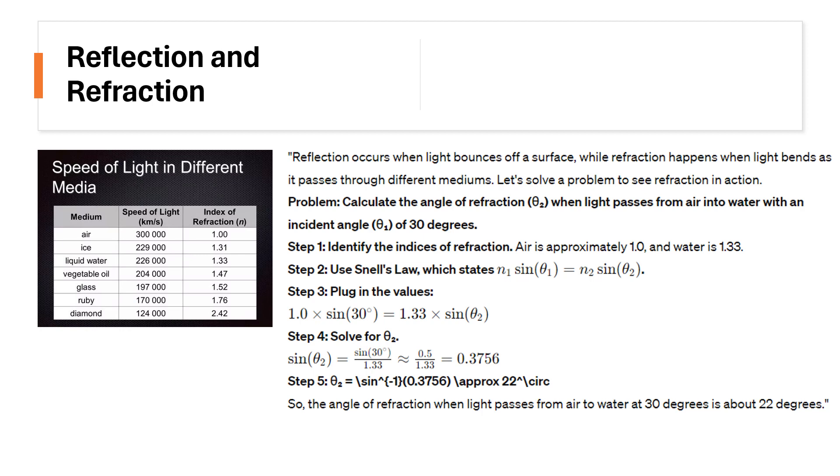Let's plug in the given values: 1.0, or the n sub 1, times sine 30 degrees equals 1.33 times sine theta 2. Solve for theta 2: sine of 30 degrees divided by 1.33 equals 0.3756. If you get the equivalent degree, it's about 22 degrees. You can also compute this using your scientific calculator to double check if you get the correct answer. That's for refraction.